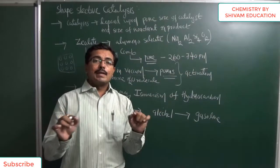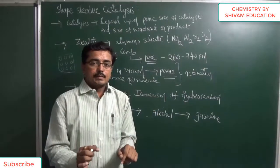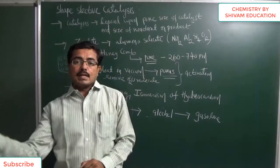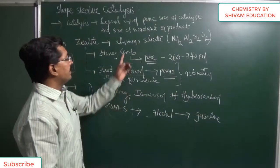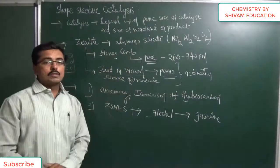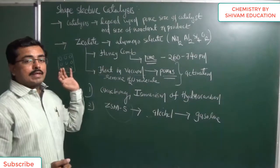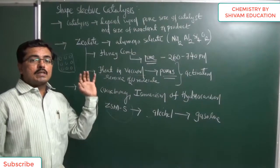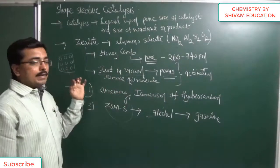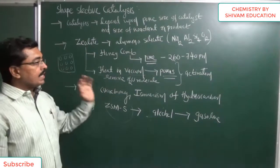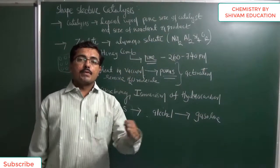It is observed that zeolite has a three-dimensional network structure like a honeycomb, and it has tiny pores. The size of the pores is 260 to 740 pm. So the catalysis phenomena of zeolite depends upon the size of the reactant, product, as well as the pore of the catalyst. Therefore it is considered a good shape selective catalyst.